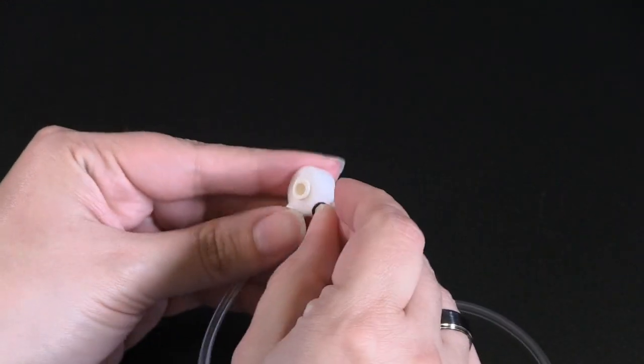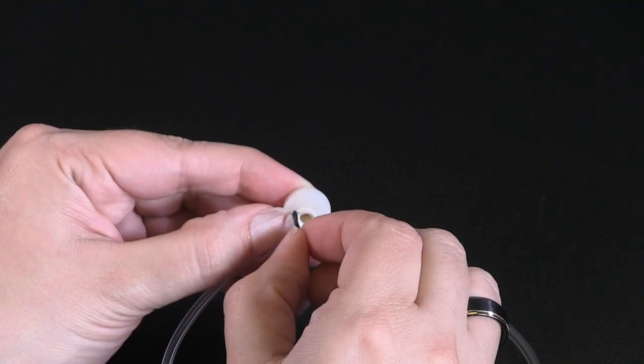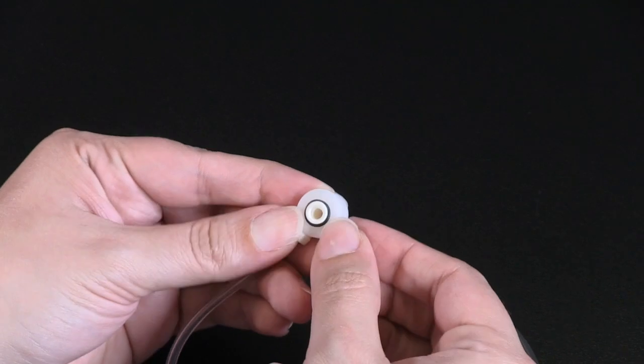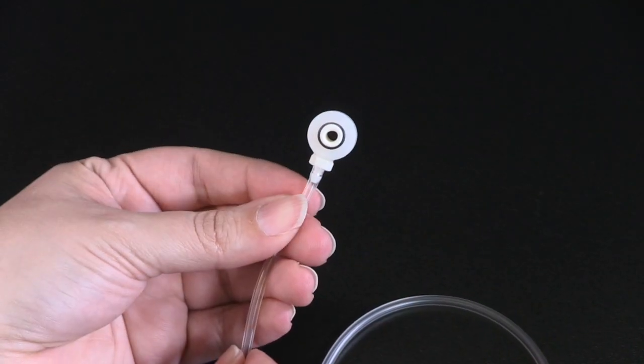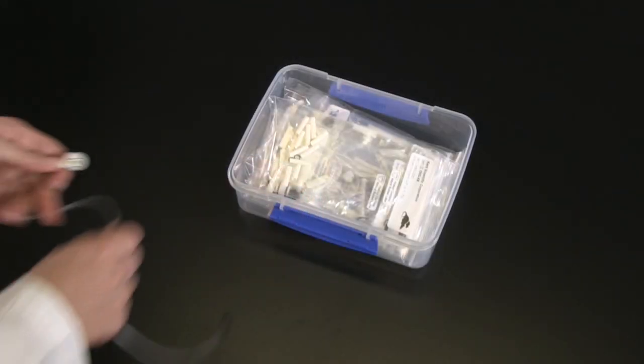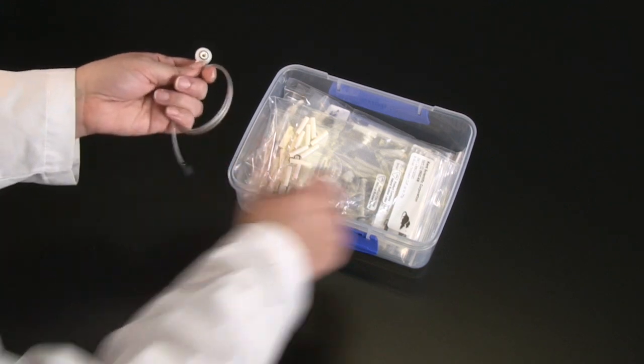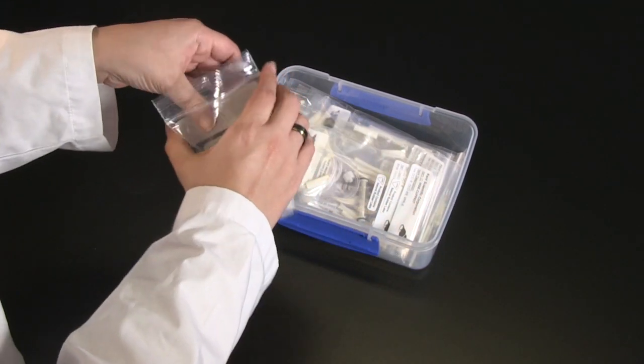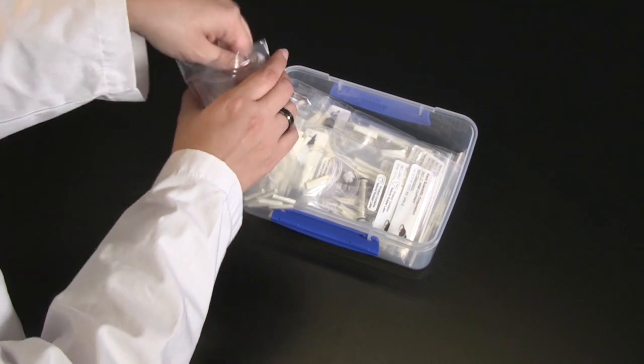Proper cuff and bladder maintenance is a critical step in maintaining your CODA non-invasive blood pressure system. To extend the lifespan of your cuffs and bladders, store them in an airtight container away from excess heat, humidity, and light when your CODA system is not in use.